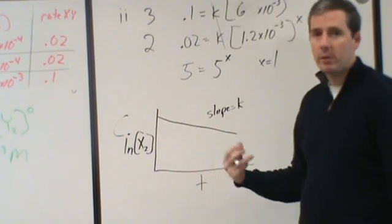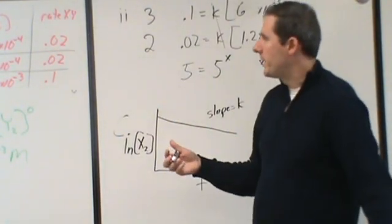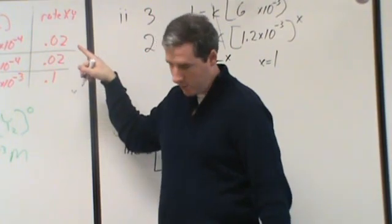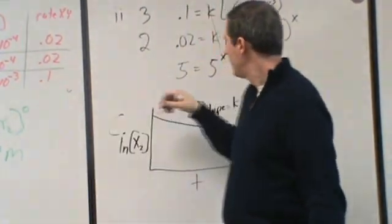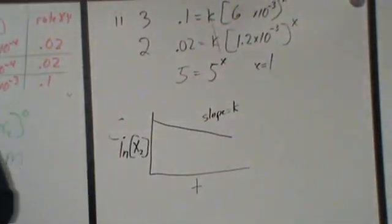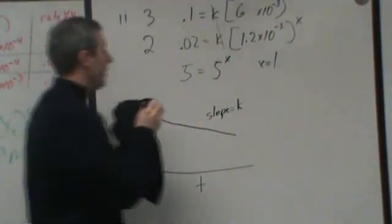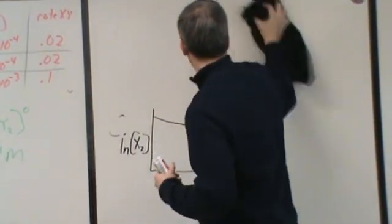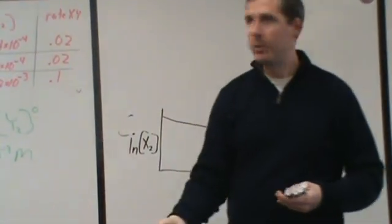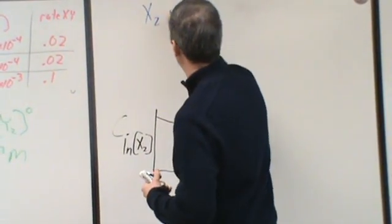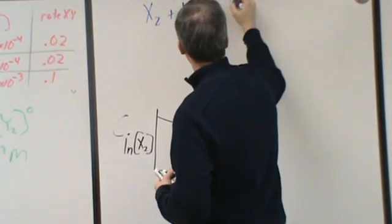And then the very last part is just a quick follow-up question. And it says, what would the initial rate be for the disappearance of x2 in experiment 3? And that's actually kind of a trick question for a lot of people. And it shouldn't be. This gets back into stoichiometry a little bit.